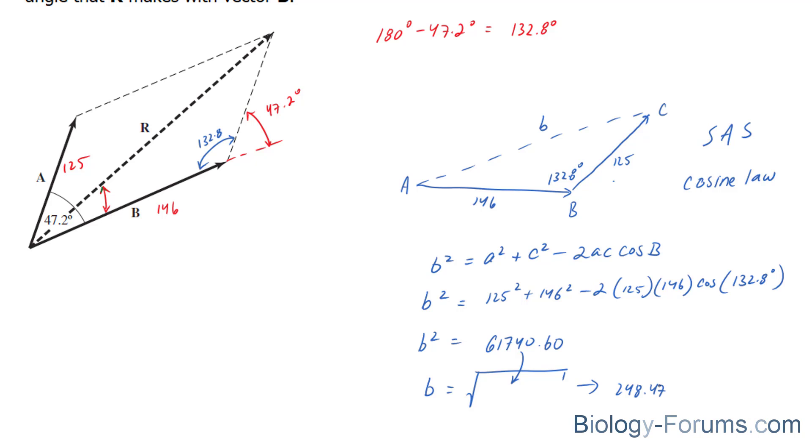We still have to find the angle that makes up the resultant vector with vector B. So, what we're going to do is replace this b with 248.47. And now what we have to do is find out this angle. Now, that's not so hard. We have a lot of information here to work with.